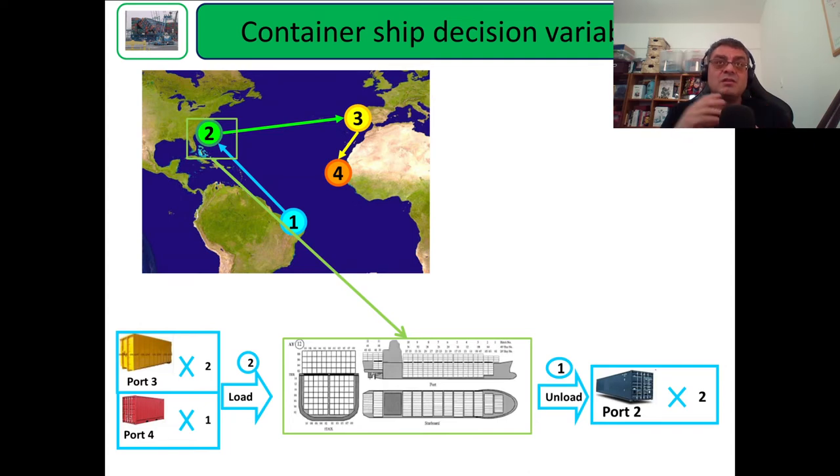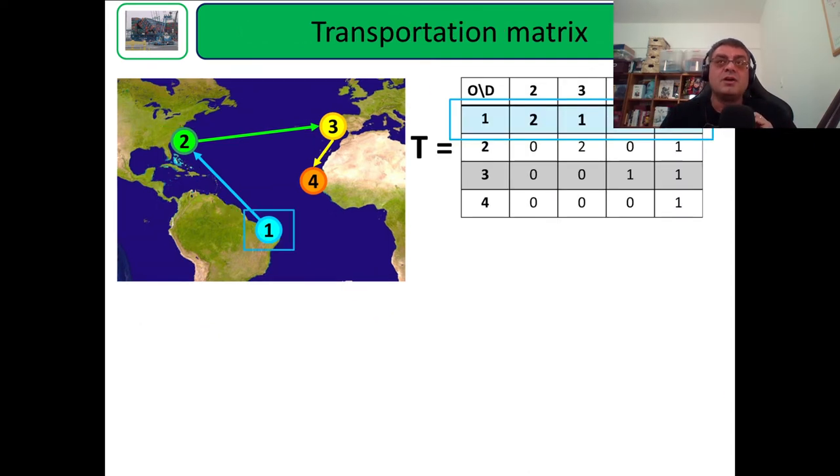The third track is about a simulation. For this simulation we're gonna need the transportation matrix. What information does this matrix carry? We can see that each line represents an origin port and each column represents a destination port. So this first line represents